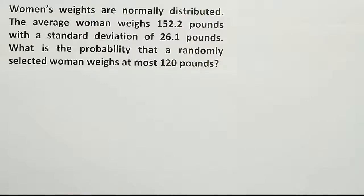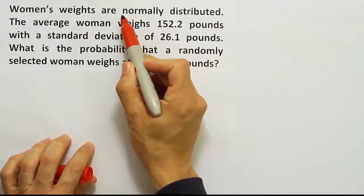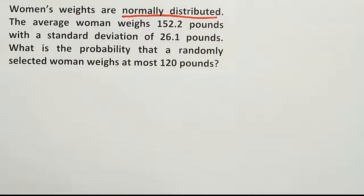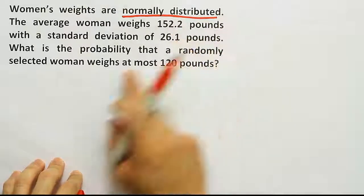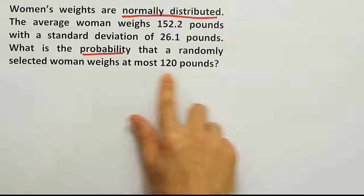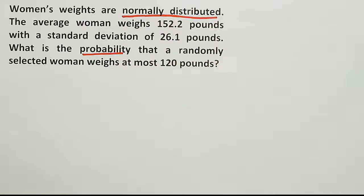Some important keywords jump out. I see the normally distributed phrase here, so I know women's weights are normally distributed. They give us the average and standard deviation, and then they ask what's the probability that a randomly selected woman weighs at most 120 pounds.